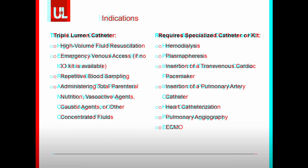There are several indications for placing a central venous catheter, some of which require a specialized type of catheter or kit. For a basic triple lumen central venous catheter, indications include high volume fluid resuscitation, emergency venous access if no intraosseous kit is available, repetitive blood sampling, administering total parenteral nutrition, highly vasoactive agents, caustic agents, or other concentrated fluids. Specific indications requiring a specialized catheter include hemodialysis and plasmapheresis (requiring a dialysis catheter), insertion of a transvenous cardiac pacemaker, pulmonary artery catheter, heart catheterization, pulmonary angiography, and ECMO, each requiring specific types of introducer catheter.